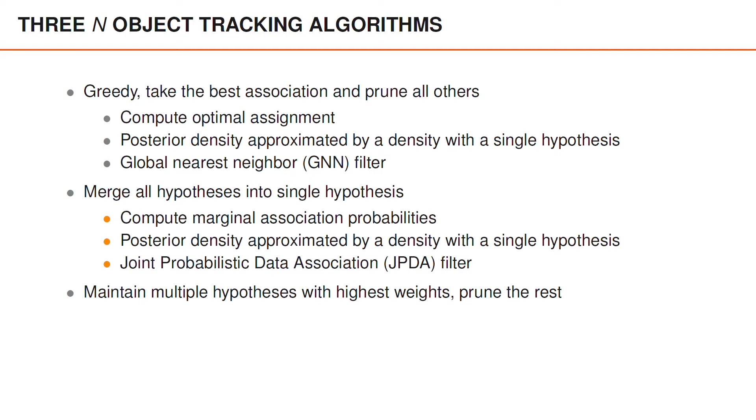Merging all hypotheses into a single hypothesis can be based on computing what is called marginal association probabilities. And we will learn what that is later. But in this case, the posterior density is again approximated by a density that has a single hypothesis. And the tracking algorithm that we will learn about is called Joint Probabilistic Data Association or JPDA filter. And this is a generalization of PDA to N objects.